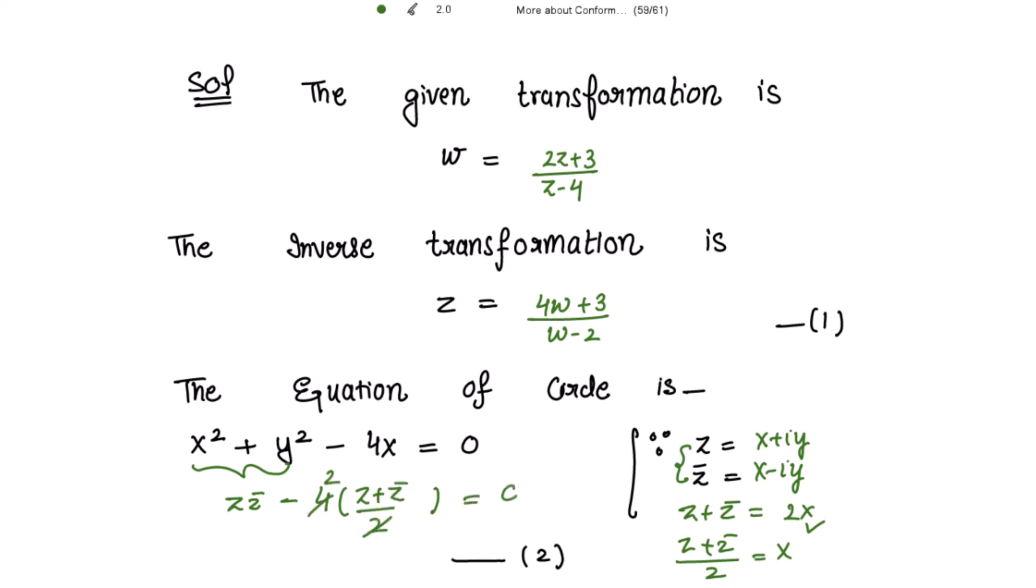So this equals 0, so I get the equation as zz̄ minus 2 times z plus z̄ equals 0. Please mark this as equation (2).